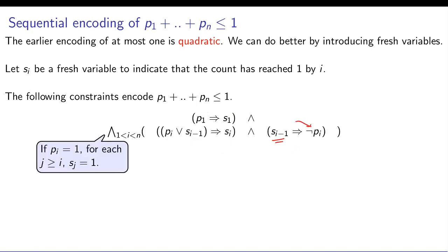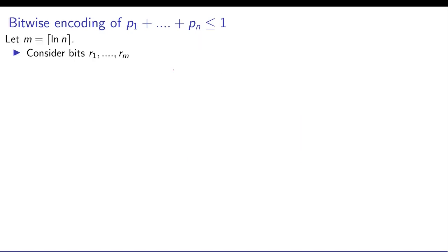Once you have seen one in the past then there should be no more ones. So therefore you need to say not of pi. At the very end you also check if s of n minus 1 is true then you have not of pn. It's a similar constraint at the last step. So bitwise encoding of the same constraint p1 to pn is less than equal to 1.